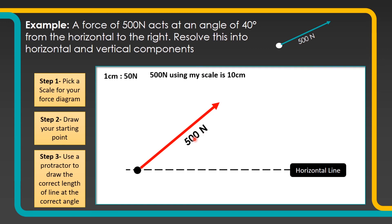That force is going to be 500 newtons, so I've put a little label on. We need to split this into a horizontal component and a vertical component. So what we're going to do again with some dotted lines is mark a vertical line from the top of the force down to the horizontal — this should meet at a right angle, so you might use your protractor to check that.